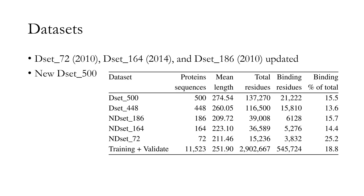The most well-known datasets that have been used in the field so far are old, and there have been a lot of changes in their sequence or in their binding regions. Therefore, we felt the obligation to update them with the most recent available version of the sequence and binding regions. Besides that, we introduced a new dataset called DSET 500. We believe this dataset to be better due to the fact that the proteins in it are less similar to one another, which makes it more suitable for testing the performance of different algorithms. We still keep DSET 448 without change because it is dated 2019 and there have been a lot of changes in this specific dataset.